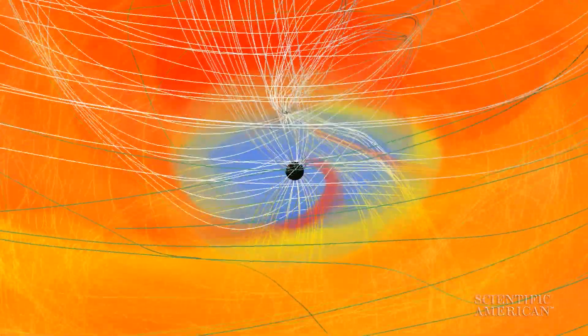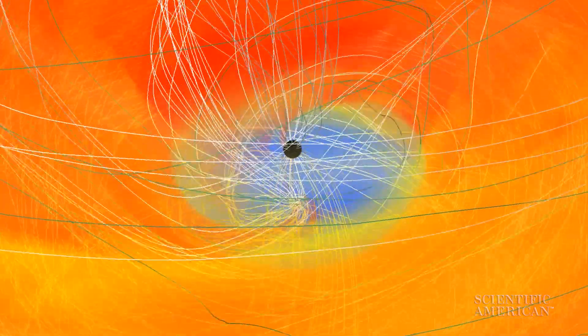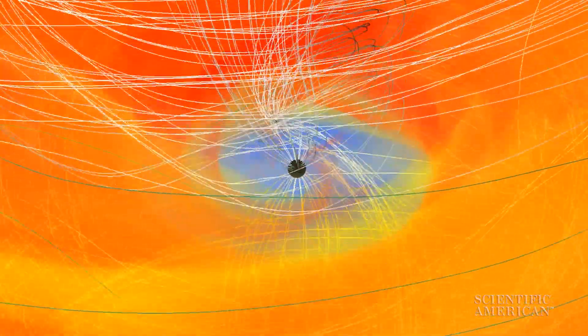As the black holes circle in toward each other, their magnetic fields, shown in white, become intertwined. Eventually, when the two supermassive objects get close enough, they suddenly plunge toward each other and fuse into one larger black hole.